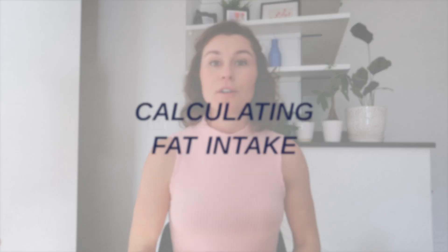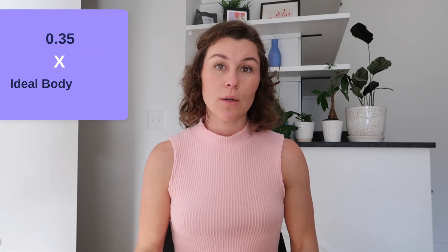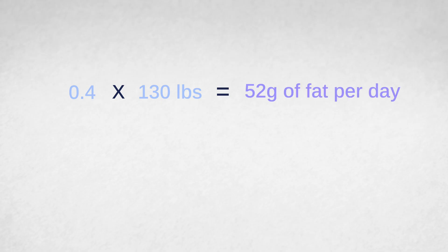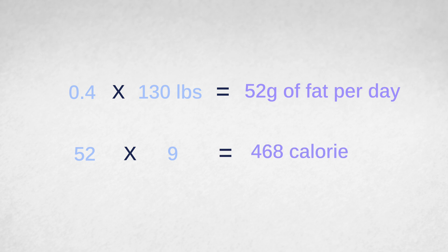The next number to calculate is your fat intake. We want a minimum amount of fat per day to preserve hormone health. The minimum is 0.35 grams per pound of ideal body weight, but I recommend using 0.4 grams per pound to give yourself some wiggle room as you adjust calories. So: 0.4 × 130 pounds = 52 grams of fat per day. To find calories from fat: 52g × 9 = 468 calories from fat.